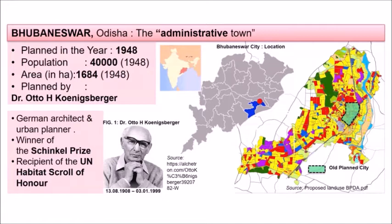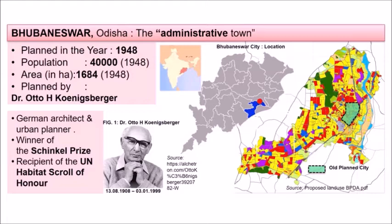Bhubaneswar was planned as the administrative capital of Odisha in 1948 for a population of 40,000, with an area of less than 1,700 hectares. It was planned by Dr. Otto H. Königsberger, a German architect and urban planner, winner of the Schinkel Prize, and recipient of the UN-Habitat scroll of honor — a very eminent and respected architect and planner.